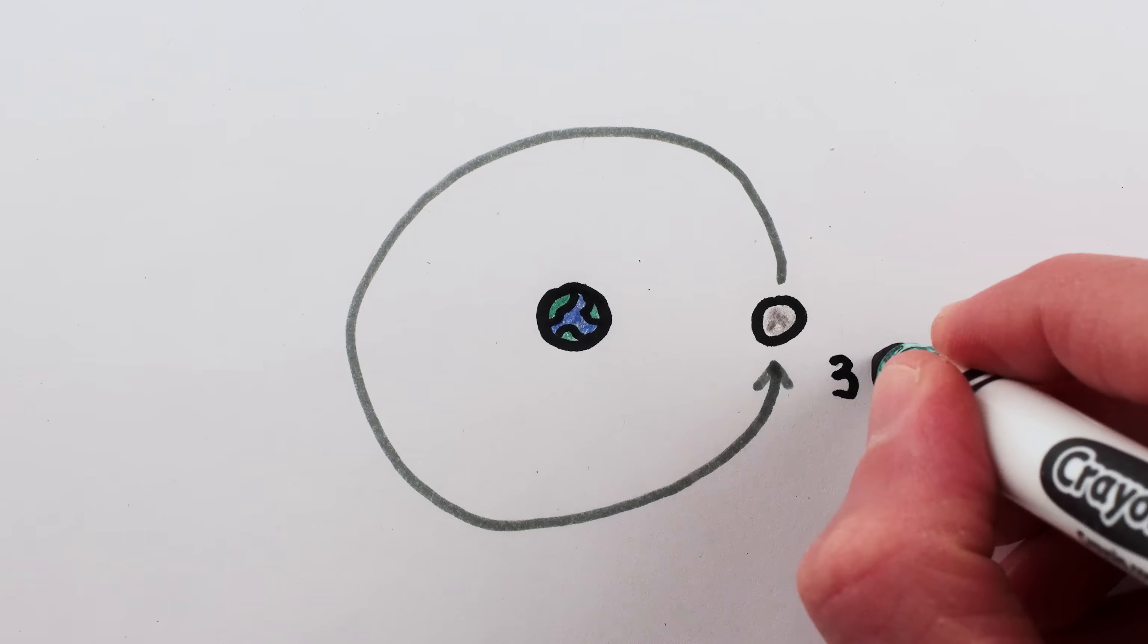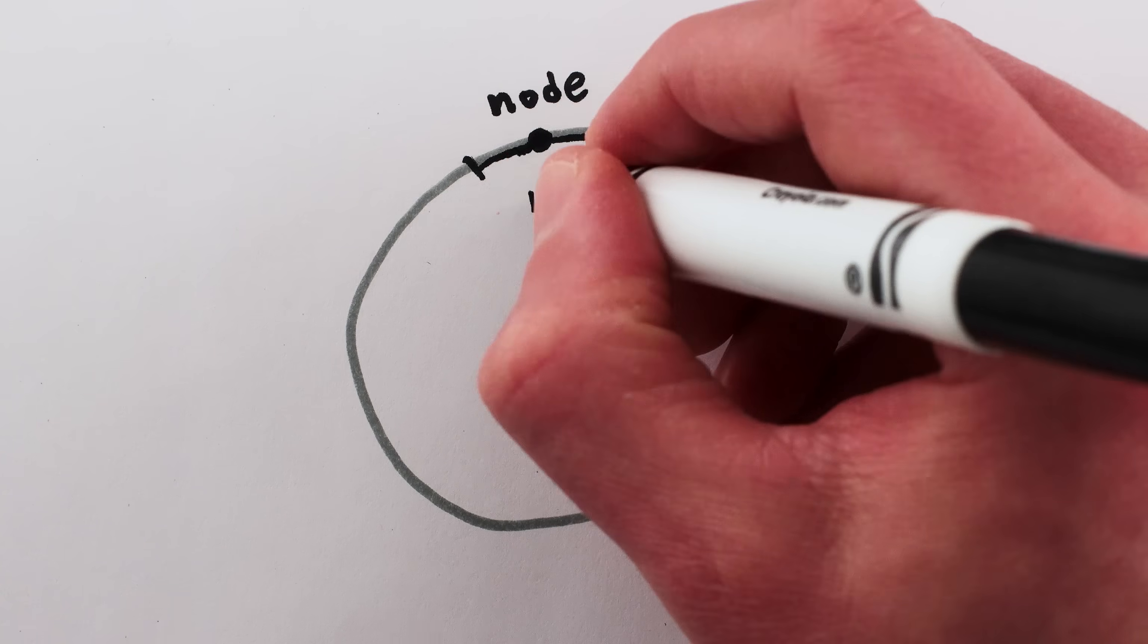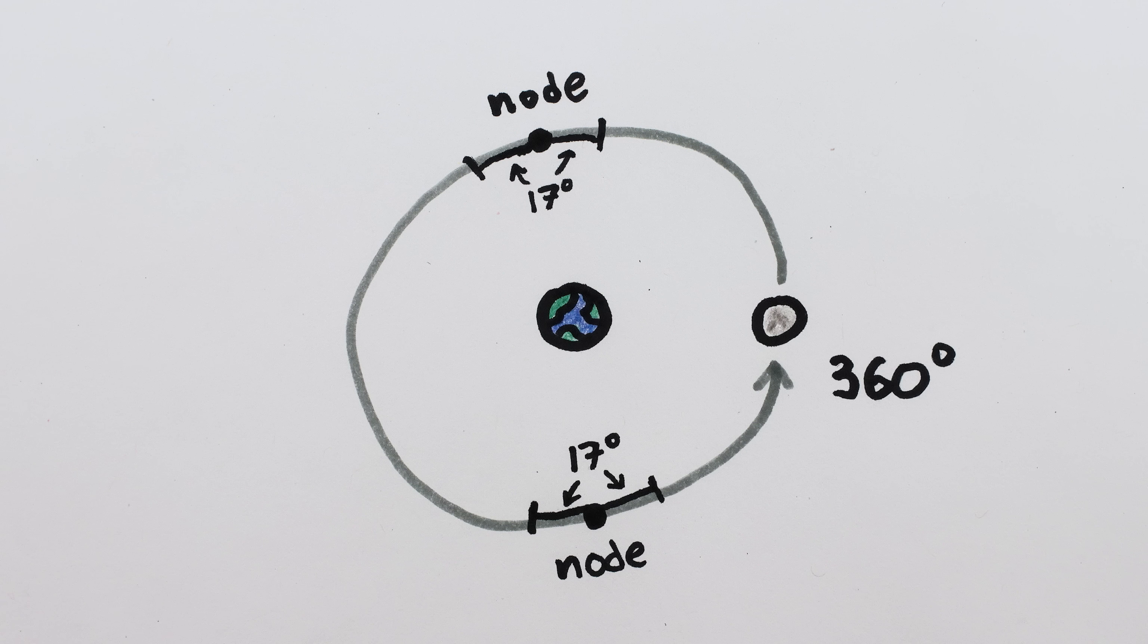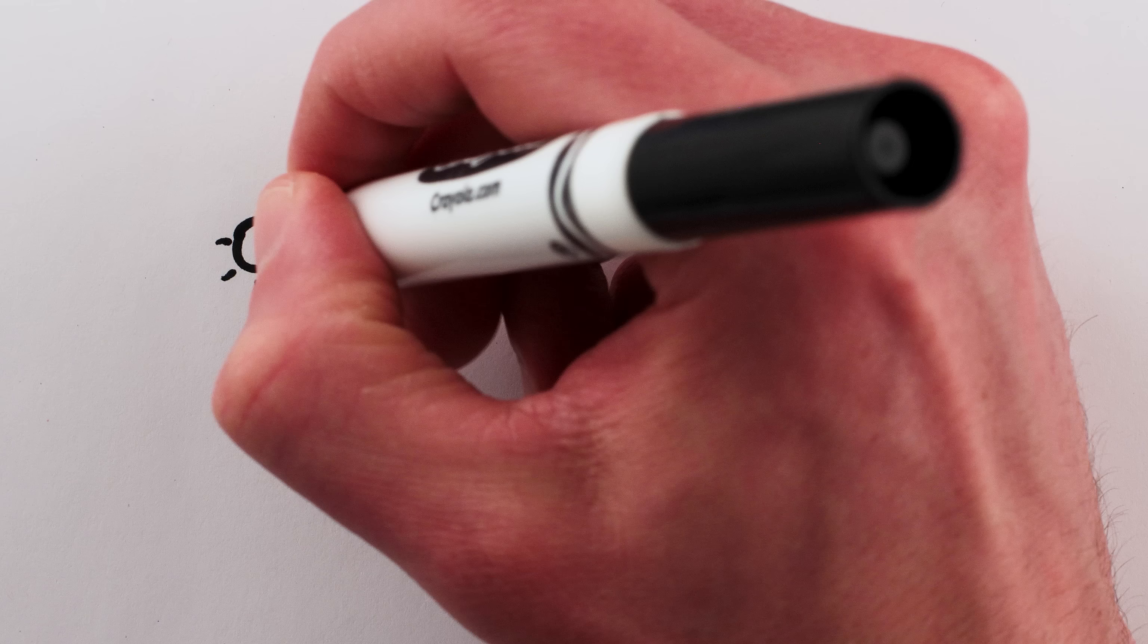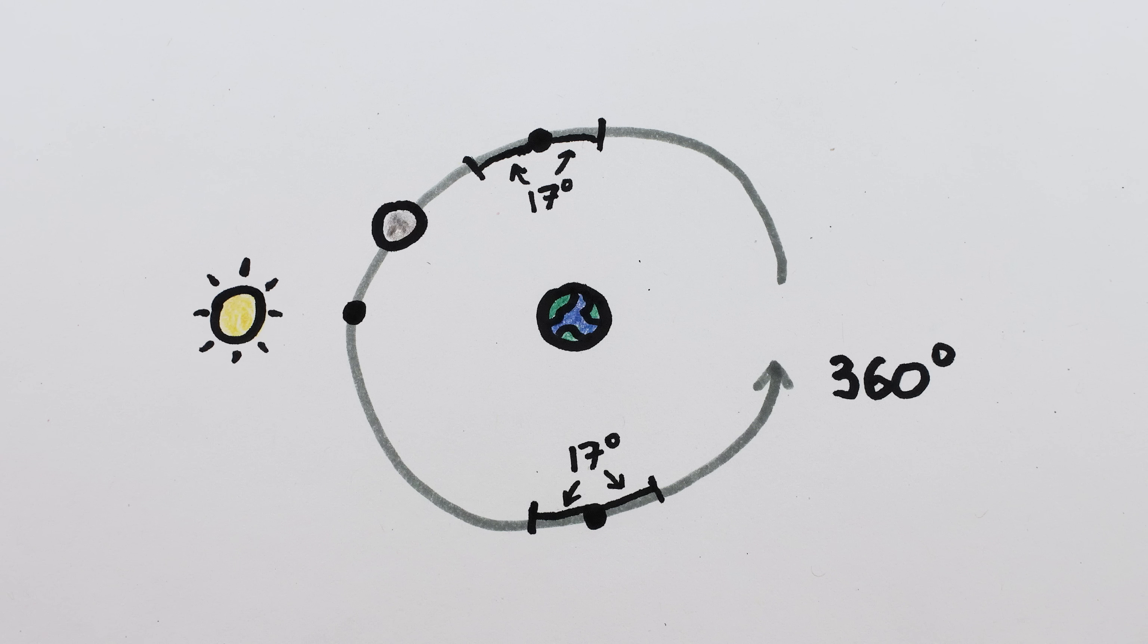The Moon's orbit contains 360 degrees, of which 17 degrees, the limit of solar eclipses on either side of the nodes, is but a small portion, and as the Sun passes by the nodes but twice in a year, it is no wonder that we have so many new moons without eclipses.